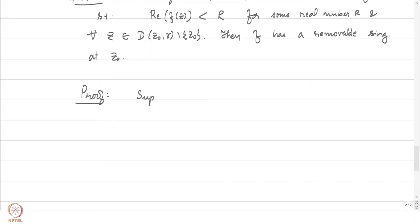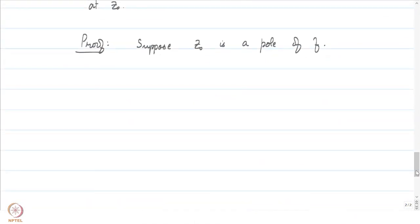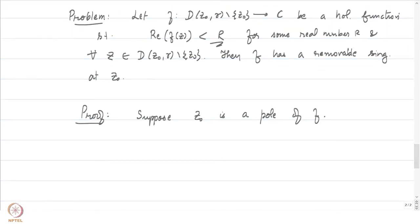Suppose z₀ is a pole. Then by our previous problem, there is some capital R — let me change the notation to avoid confusion with the given r, so let me use N — such that the set of all z with |z| > N is contained in f(D(z₀, r) minus {z₀}).